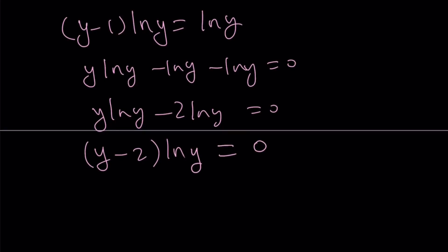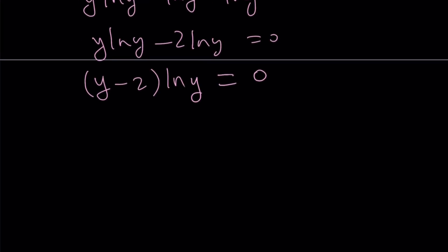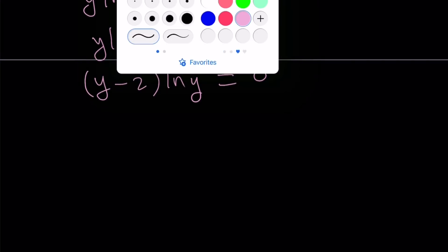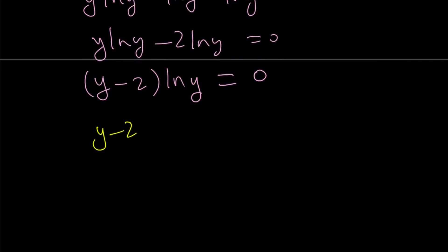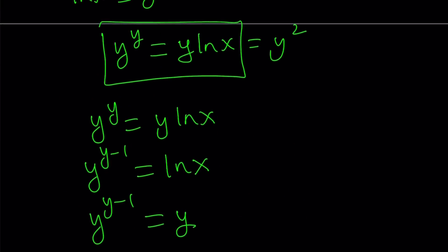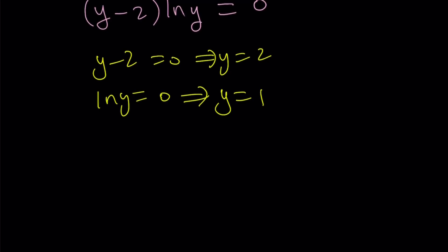So this is really nice because we got rid of all the powers. We have two terms that are being multiplied and the product is zero. So from here, we can say, all right, either y minus two is equal to zero, which means y equals two, or ln y is equal to zero, which means y equals one. But remember, y is the same as ln x. So we can set this equal to ln x and ln x. And from here, we get x equals e squared and x equals e to the first power, or just e.